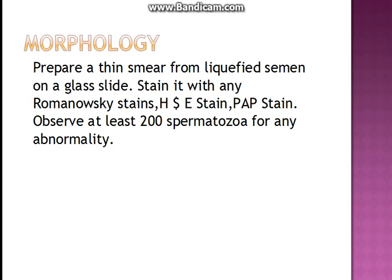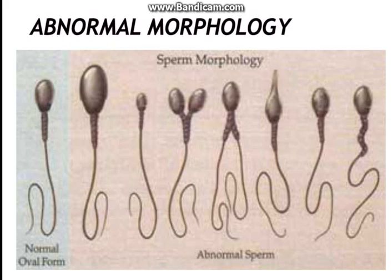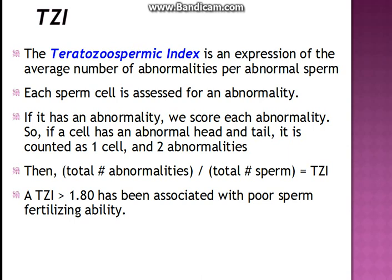To see morphological defects, we prepare a thin smear of the liquefied semen and stain it with any stain such as Romanowsky, H&E, or Pap stain, and observe at least 200 sperms. The morphological defects that can be seen include: swollen head, small head, two heads, two tails, pointed head, a longer midpiece, or a shorter tail.